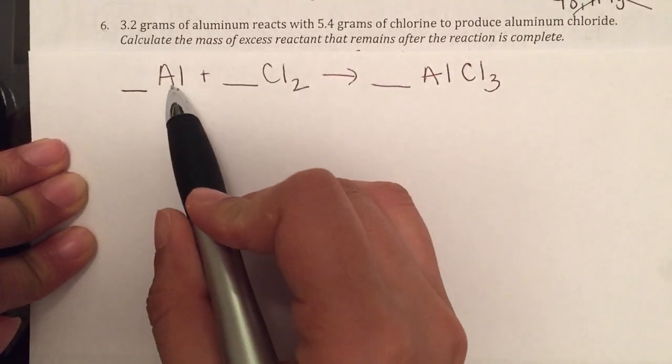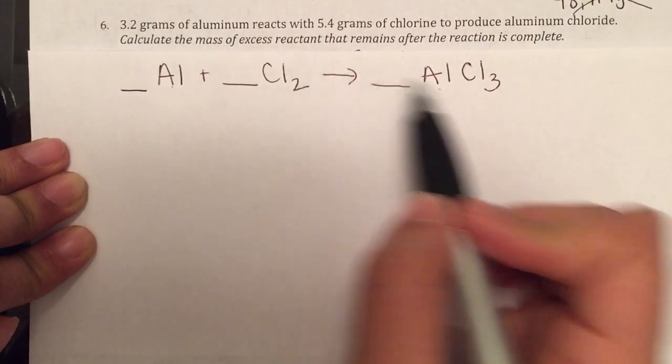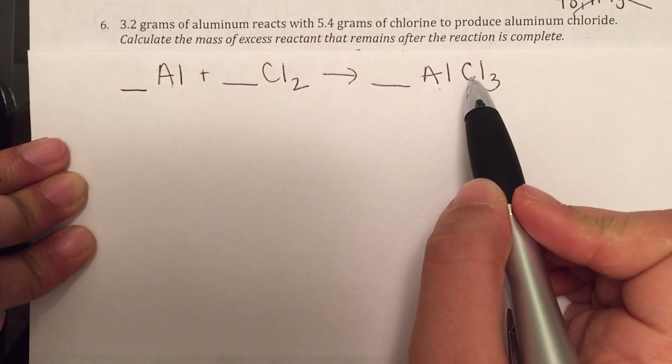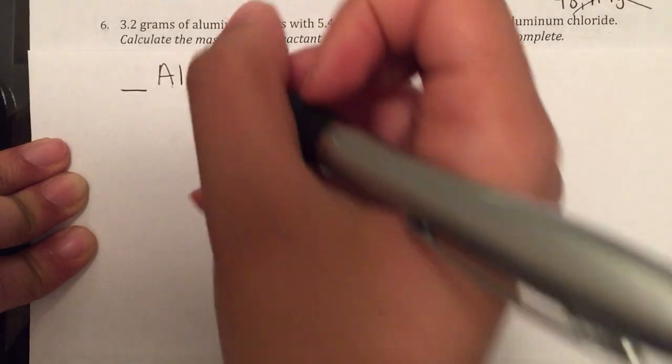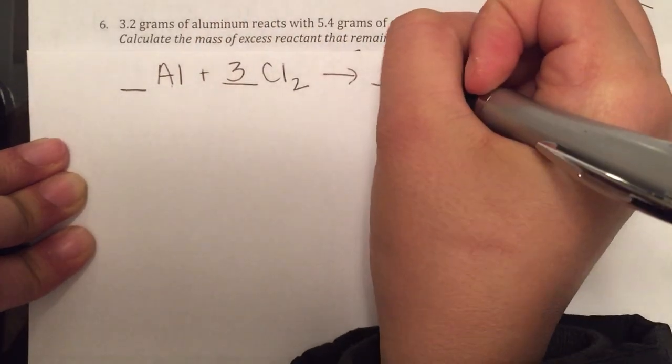We're looking to balance this. My aluminum's already balanced, but I have 2 chlorines and 3 chlorines. So the only way to balance these two is to get them both to 6. So we have 3 and we have 2.